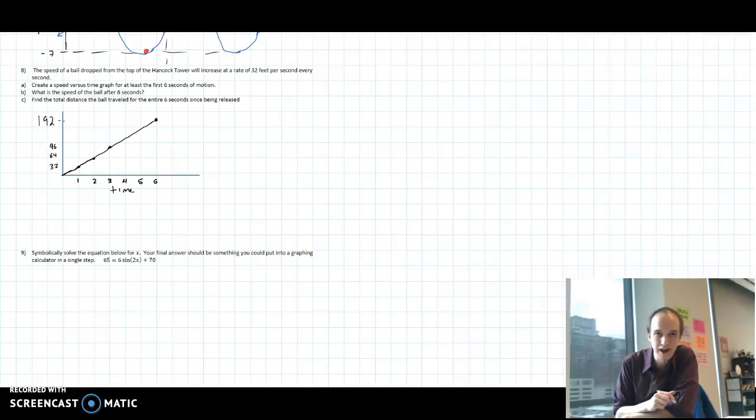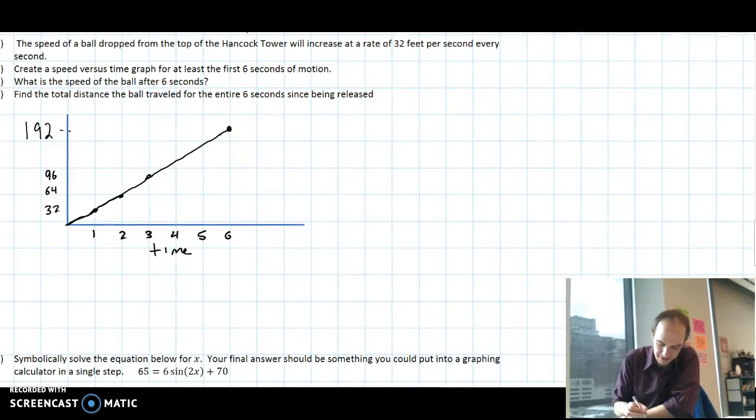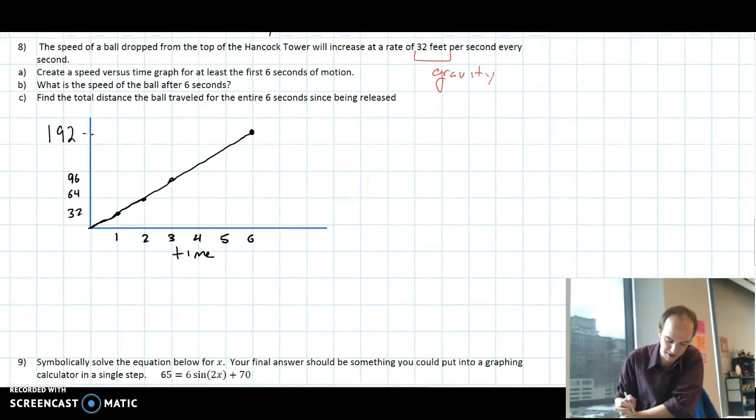Welcome back. We're going to continue with number 8 on the review sheet. The speed of a ball dropped from the top of the Hancock Tower increases at a rate of 32 feet per second every second. That 32 is because of gravity. Unless you're on a different planet, that number is always going to be the same. Today we're on Earth because we're talking about the Hancock Tower.